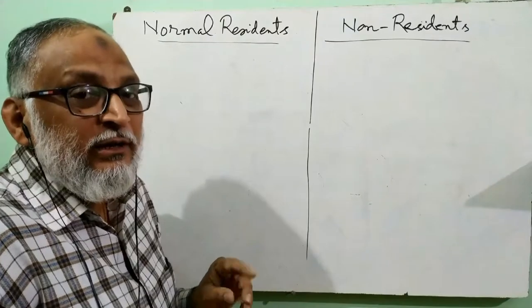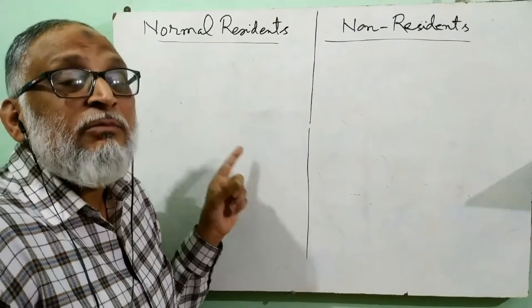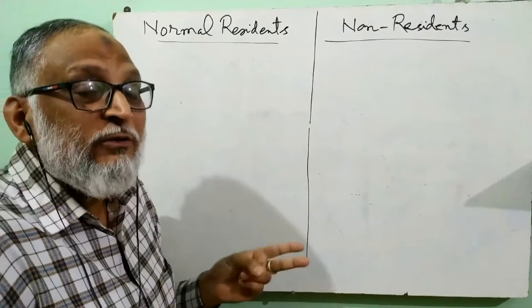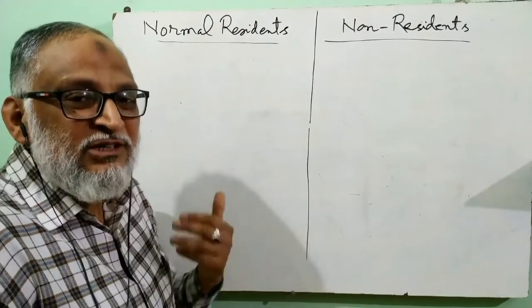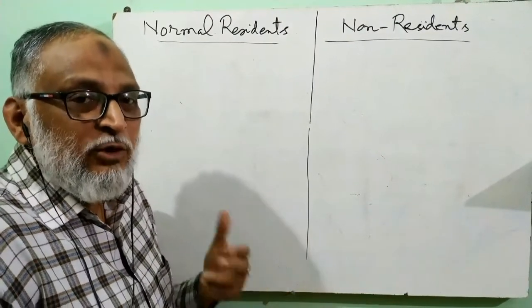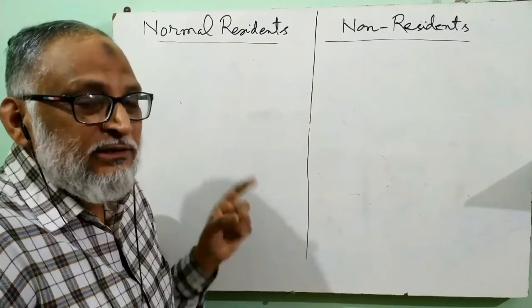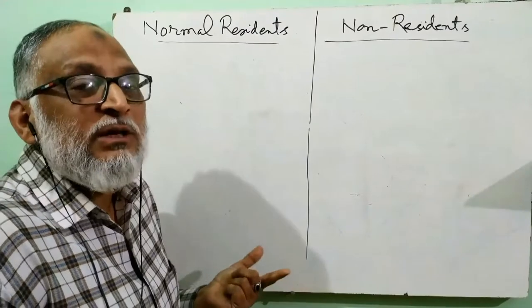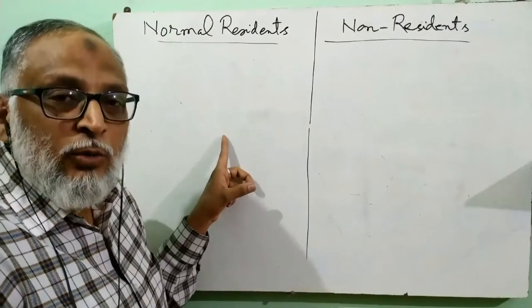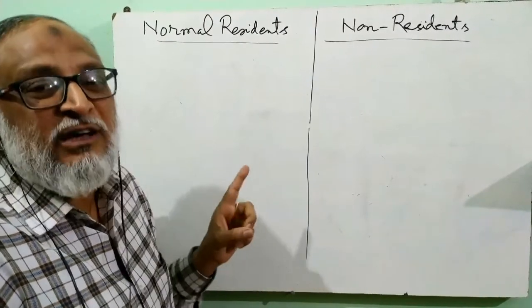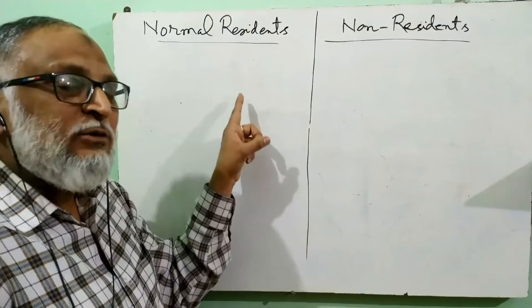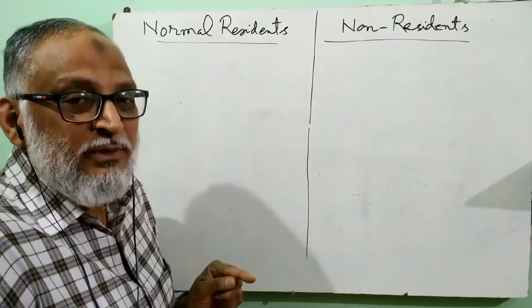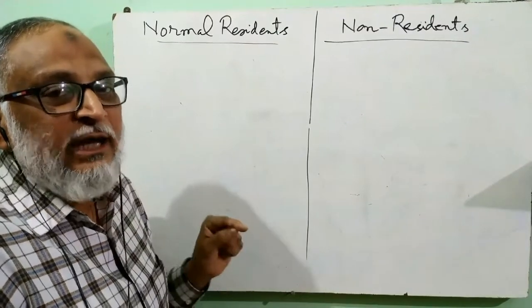But it is not necessary that he has received the citizenship of that country. So citizenship and residency are two different concepts. Citizenship involves many legalities and many political considerations, whereas normal residency has no concern with that. A normal resident may or may not be a citizen of that country — it doesn't matter. So for being a normal resident, what is important? The important thing is he must have economic interest in that country.